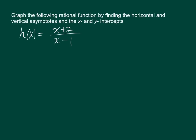In order to find the vertical asymptote of a rational function, we need to look at the denominator and set it equal to 0 and solve for x. When you do this, we find that the vertical asymptote is x equals 1.